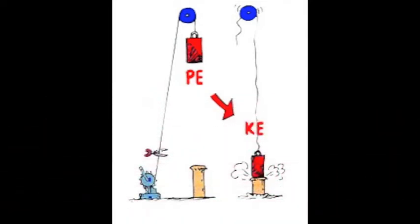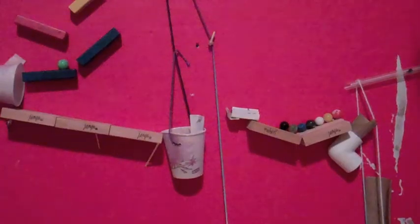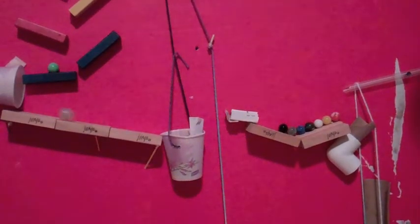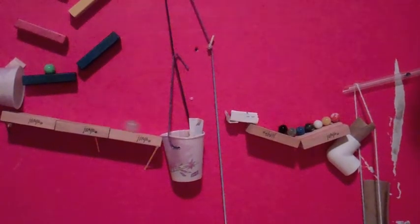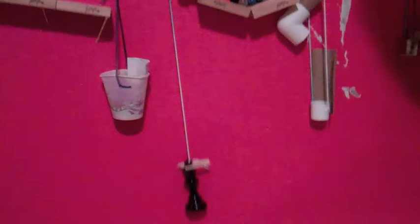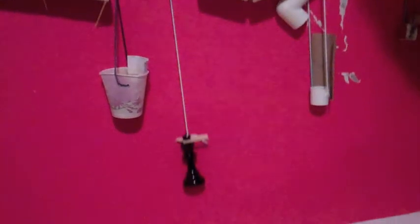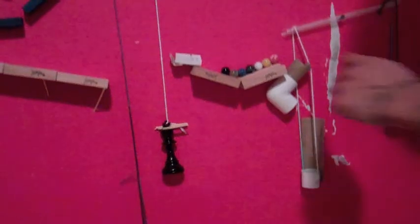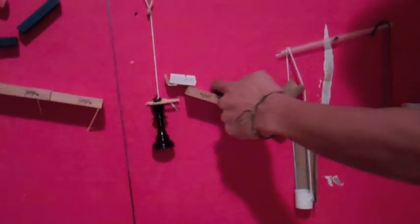Explain how your apparatus exhibits a transfer of potential energy to kinetic. The cup of marble that is attached to the pulley has gravitational potential energy. When a large marble falls into the cup, the overall mass increases and outweighs the mass of the object attached to the other side of the pulley. When this cup falls after being suspended above the zero reference level of the flag, or the ground, this is when potential energy is transferred to kinetic energy.